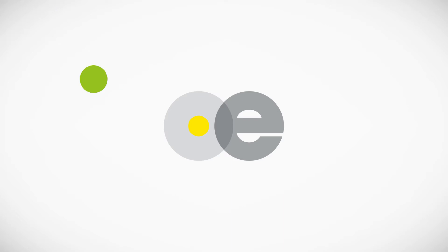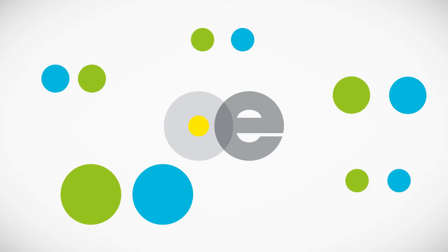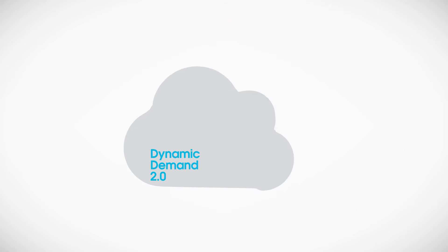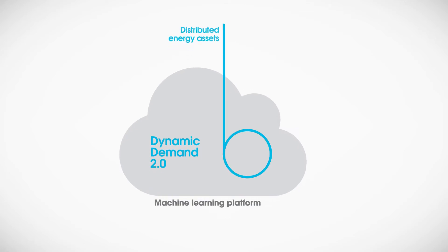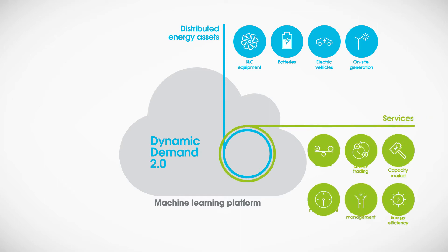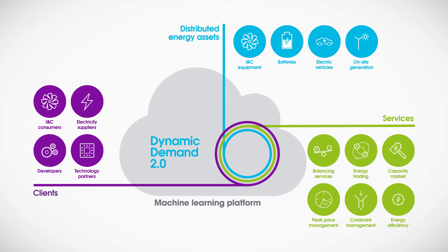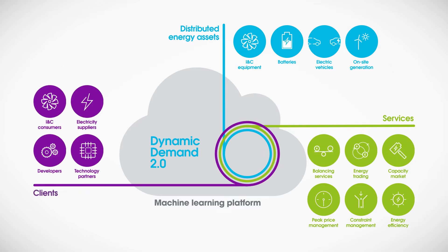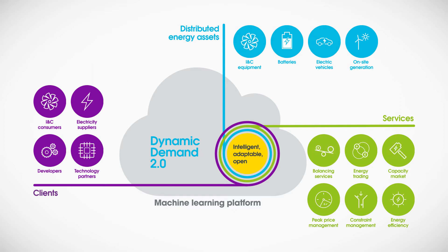At Open Energy, we're using advanced technology and data-driven insight to make this happen. Dynamic Demand 2 connects distributed energy assets — from industrial equipment and batteries through to electric vehicles and local generation — and intelligently aggregates and optimizes their use in real time. The platform maximizes value for businesses and provides vital demand flexibility when and where it's needed most, to create a cleaner and more affordable energy system.